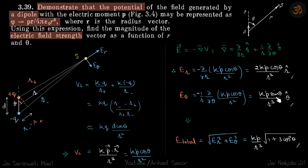And net field will be √(Er² + Eθ²) which will be (kp/r³)√(1 + 3cos²θ).